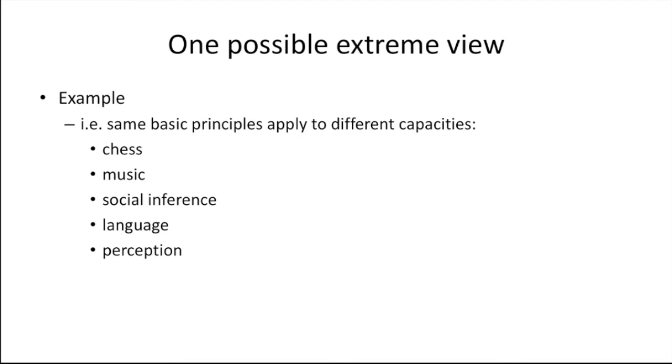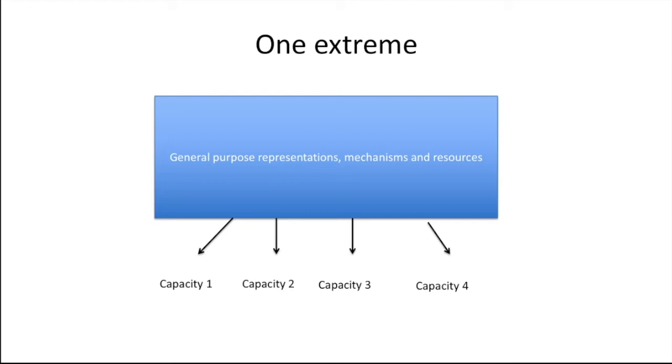Under this view, we have the same basic principles applying to different capacities. A historical example of this would perhaps be the classical British associationists. They proposed that the basic unifying principle underlying the variety of mental phenomena is the association of ideas. And that all that there is to perception, memory, imagination, and the other phenomena, is ideas being associated according to the principles of contiguity, resemblance, and causality. And that applies to explaining music, language, perception, social inference, anything. In any case, what we have is the same kind of general resource being deployed for particular tasks. There is no internal specialization to speak of. And this is what is depicted in this diagram—exactly the same cognitive engine applied to all sorts of capacities and tasks.